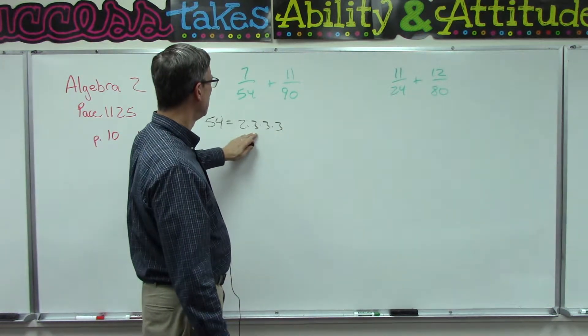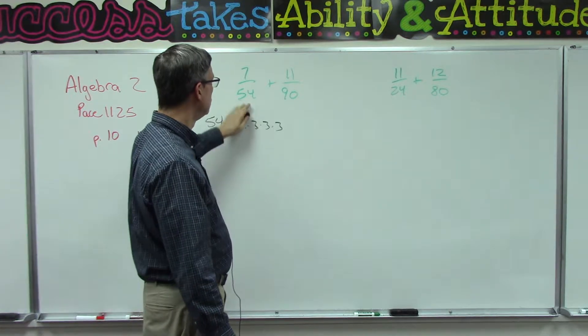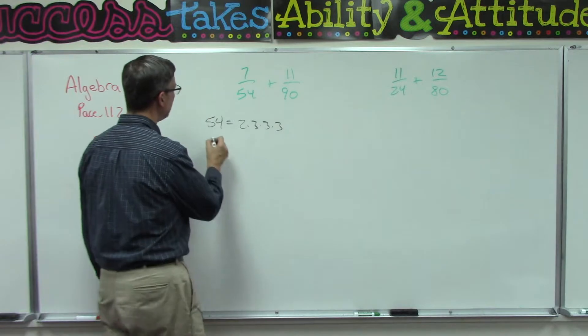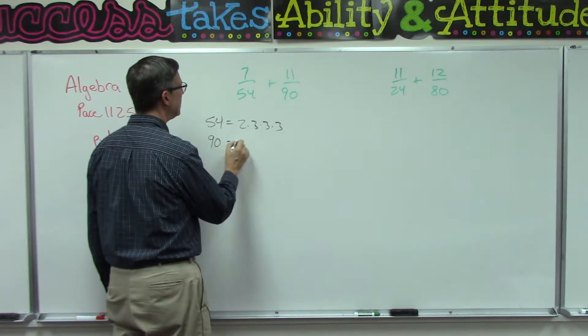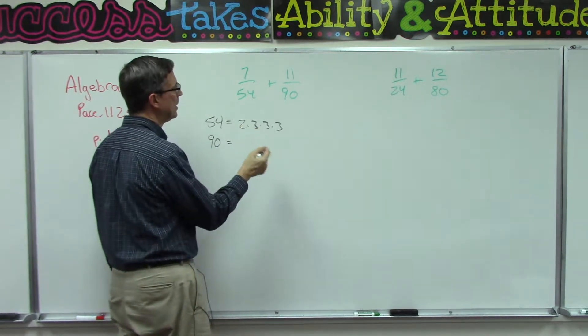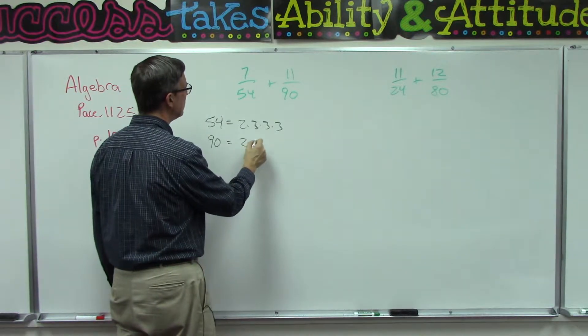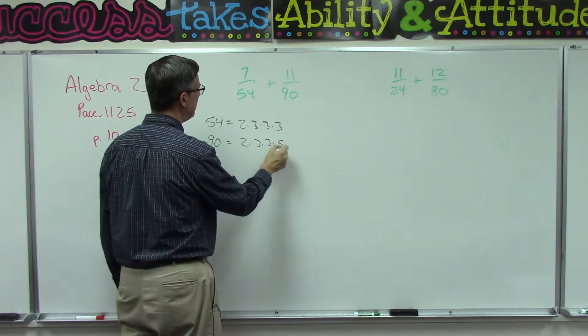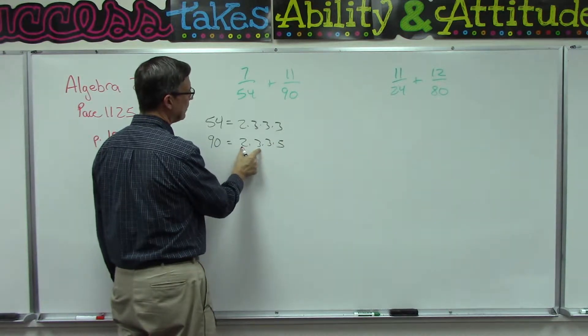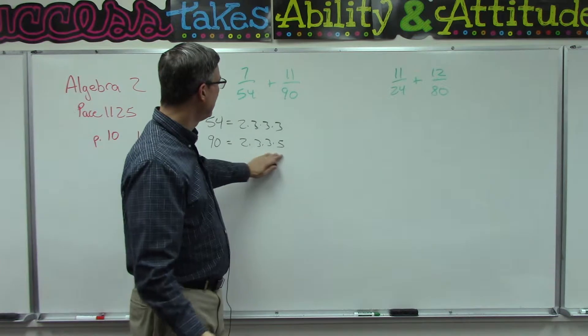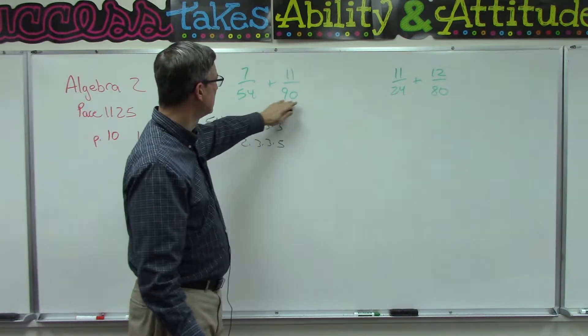You could work backwards and say 3 times 3 is 9, times 3 is 27, 27 times 2 is 54. And then 90, what are the factors that make up 90? Well, 9 times 10. So 10 is 2 times 5, and 9 is 3 times 3.